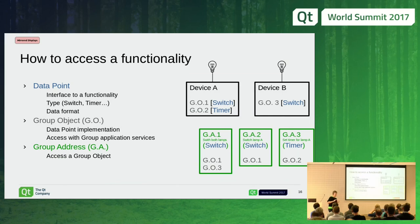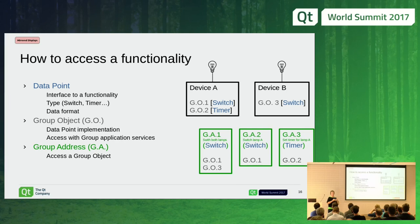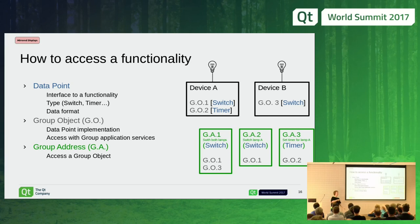Let's try to look at things from a slightly different perspective. Let's say you want to turn on a lamp. These are the notions we need to be familiar with. The notion of data point — as I said, the data point is the interface to a functionality. It can be of different types: it can be a switch, a timer, you name it. And it has a data format. For a switch it's going to be one bit; if it's a date for a clock, then it's going to be much more complicated — you'll have the year, the month, etc.